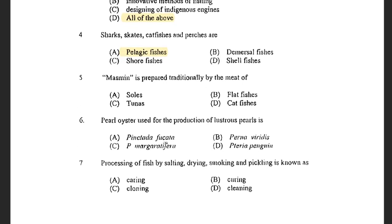Next question: Masmin is prepared traditionally by the meat of — options are Soles, Flatfishes, Tunas, and Catfishes. The answer is C, Tunas. Masmin is a preservation product of mainly skipjack tuna, which is mostly famous in Lakshadweep. The fresh fillets are boiled, smoked and dried, and it is equivalent to fresh tuna only.